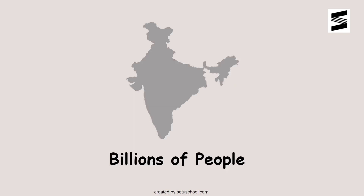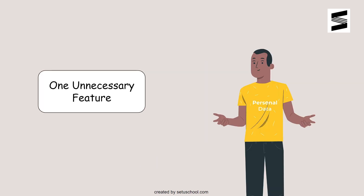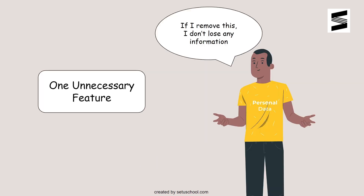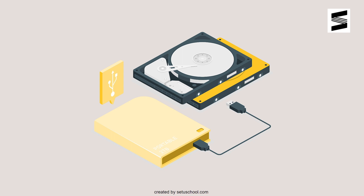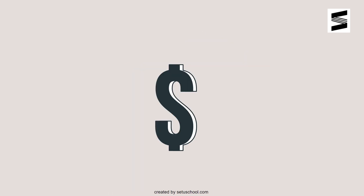Now, as there are billions of people in our country, if we add one unnecessary feature — one which, if not added, we don't lose any extra information — the addition of this feature only makes the entire process much more complicated. This data needs to be stored somewhere, and this extra information takes up a lot of memory space, thus increasing the cost.